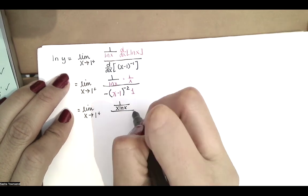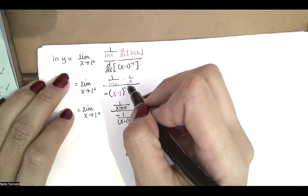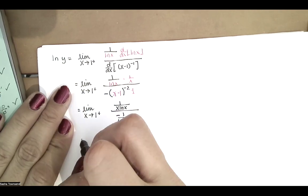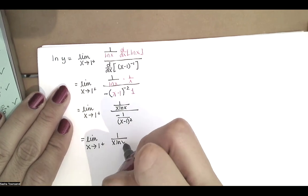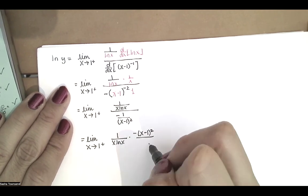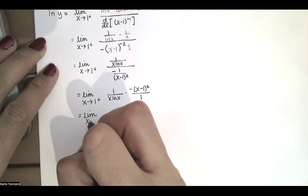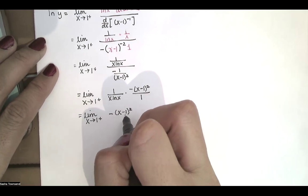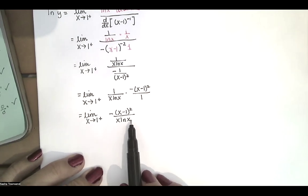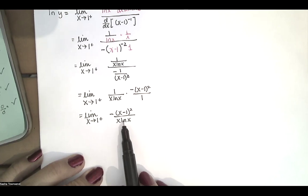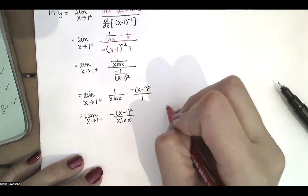So we have 1 divided by x natural log of x, all divided by negative 1 over x minus 1 squared. Whenever we have a fraction divided by a fraction, we can simplify by multiplying by the reciprocal. We leave the numerator fraction alone and multiply by the reciprocal of the denominator fraction. After multiplying straight across and simplifying, as x approaches 1, natural log of x approaches 0, so we have a 1 times 0 in the denominator approaching 0, and the numerator also approaching 0. So this is a 0 over 0 indeterminate form.